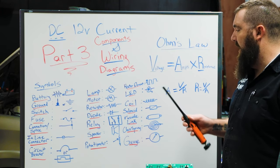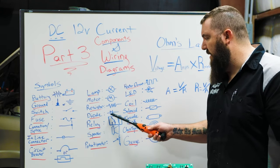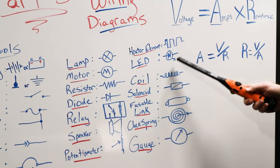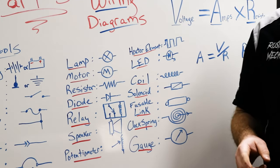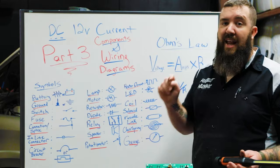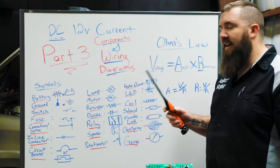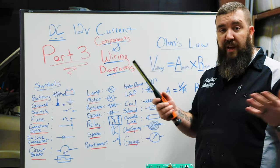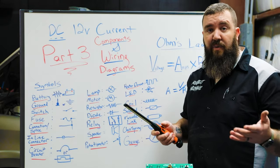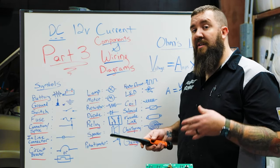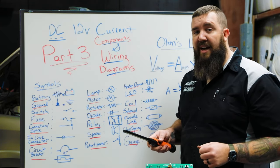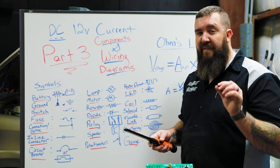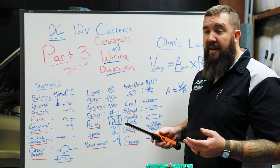An LED kind of looks like what we see with our diode, but it's within a circle and has a little arrow facing out of it — that just means there's light coming out of it. It is kind of like a resistive diode that creates light. We saw an LED within our test light on the last video, and it takes very little current to make that one light up.